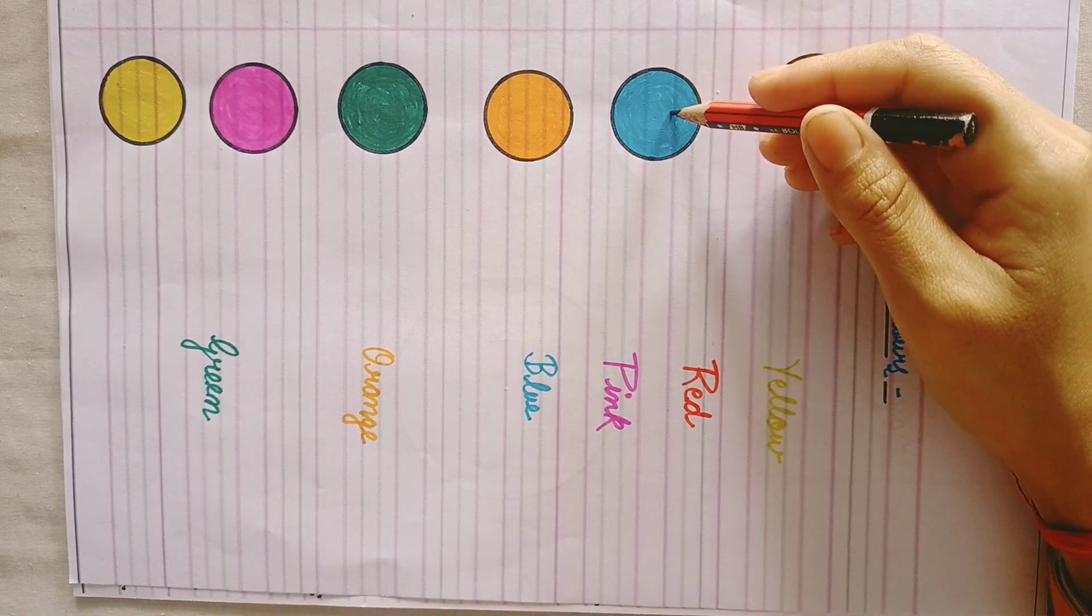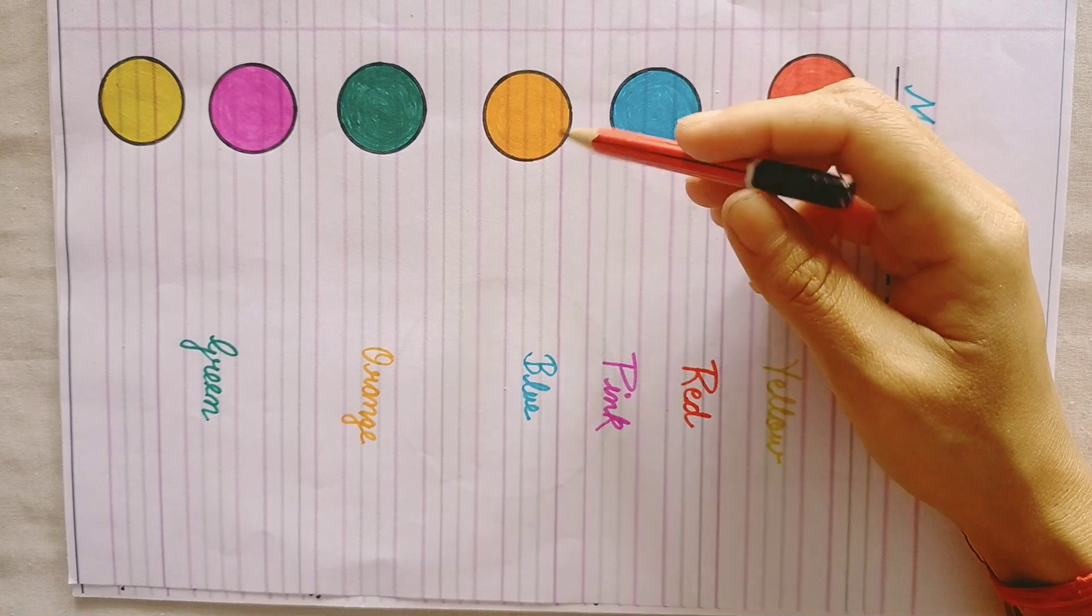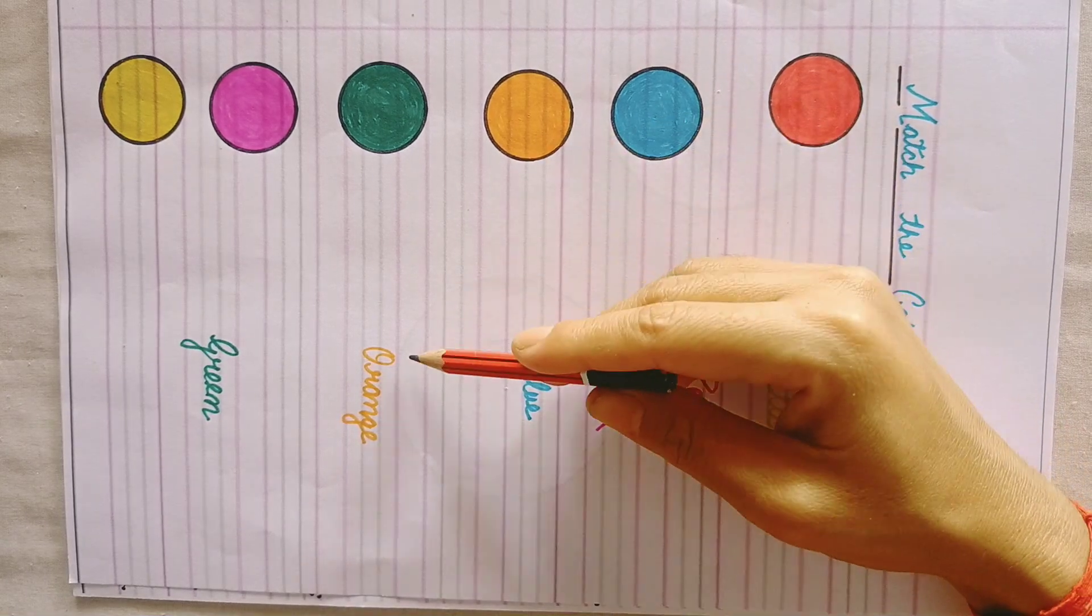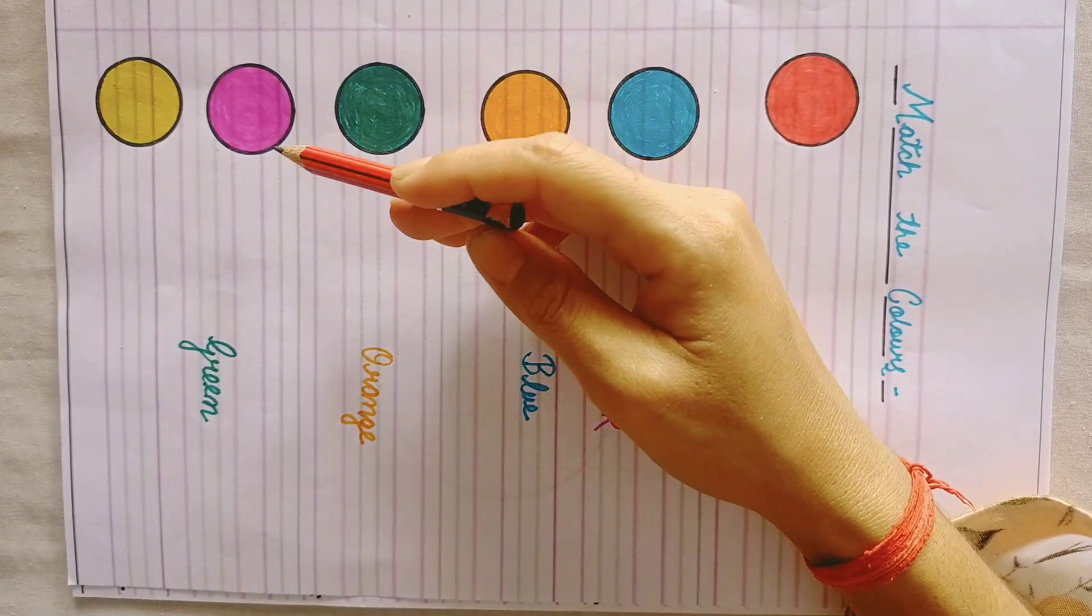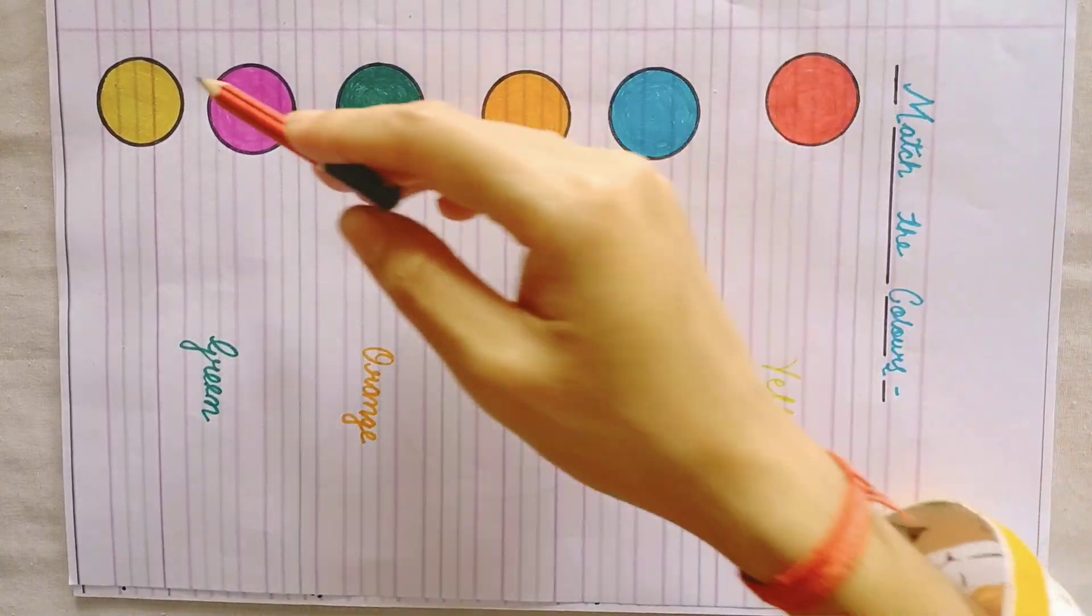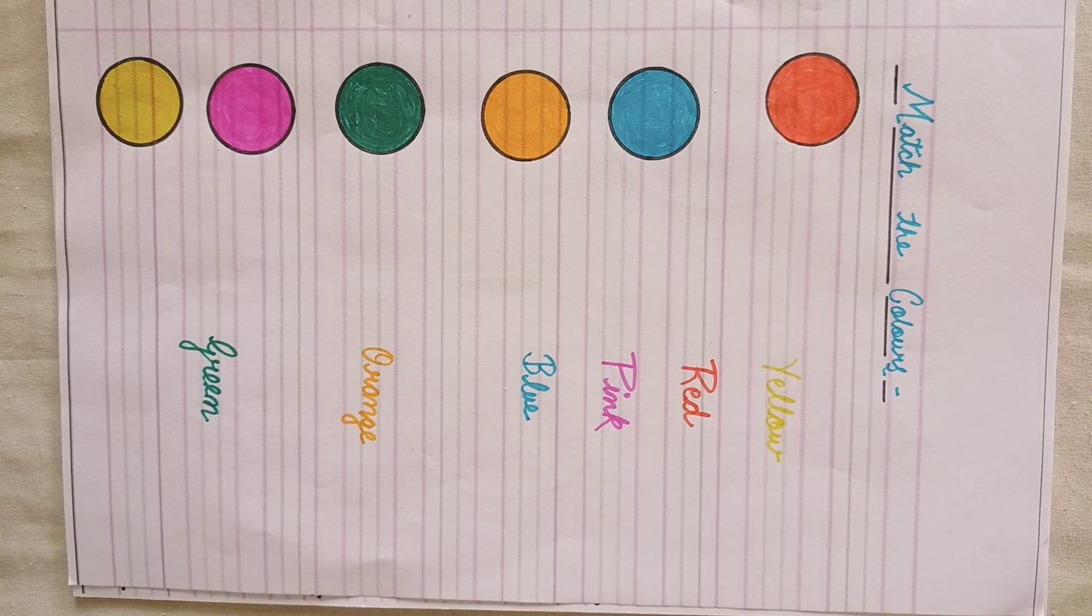This is blue. So blue you will match. This is orange, with orange you will match. This is green, with green you will match. This is pink, with pink you will match, and this is yellow, yellow you will match.